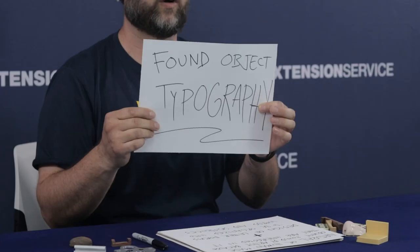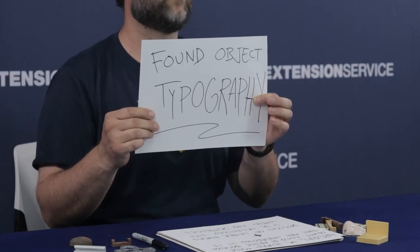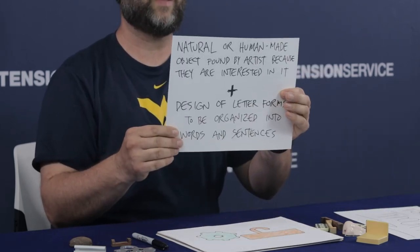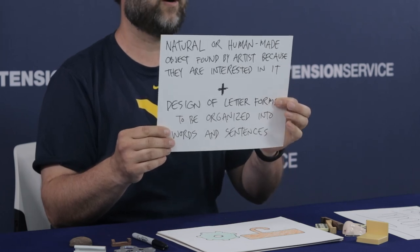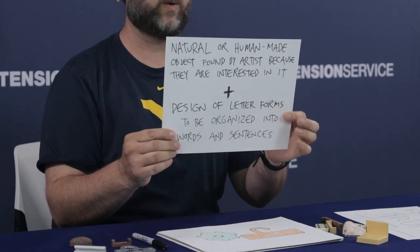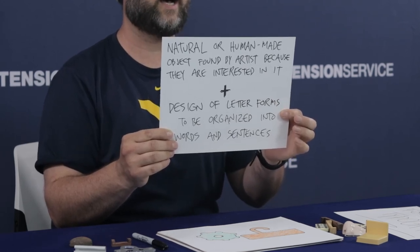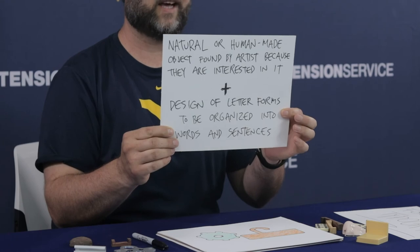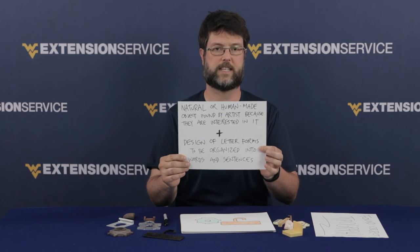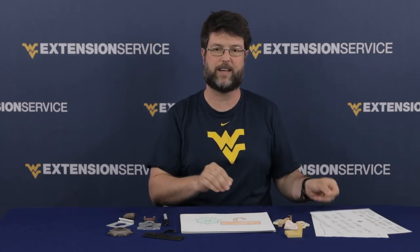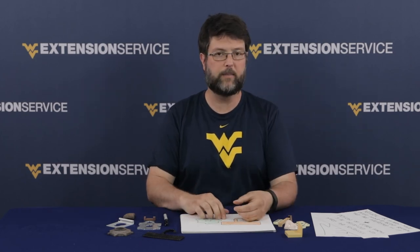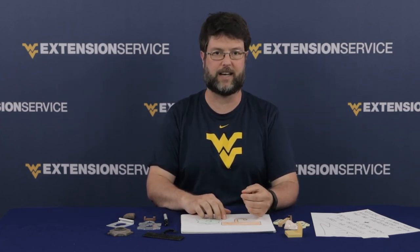One of the things I'm really excited about is teaching you today about found object typography. This is really about a love of reading and writing, which even in my job working with my hands, I use reading and writing every day. A found object is a natural or human-made object found by an artist because they like the qualities of it. Typography is design using forms of letters — thinking about the design of letters and how we make those into words and sentences. It's related to the root word typing.